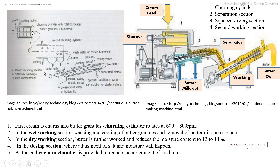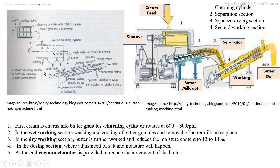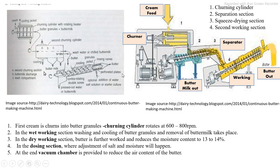As visible in the picture, the continuous butter making machine shows the first section as the high speed churning section with an external cooling jacket. The second separation section has a perforated plate at the bottom to separate buttermilk from butter and conveys it to the next section. The last working section is provided with a screw conveyor and a perforated plate at its end to separate excess buttermilk. Finally we get the butter.